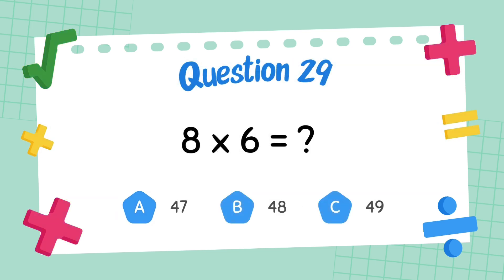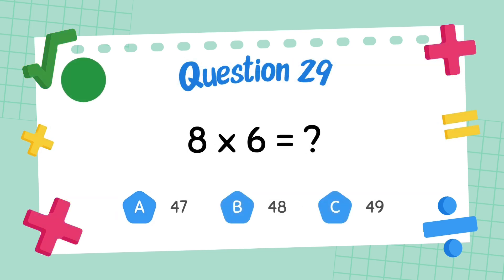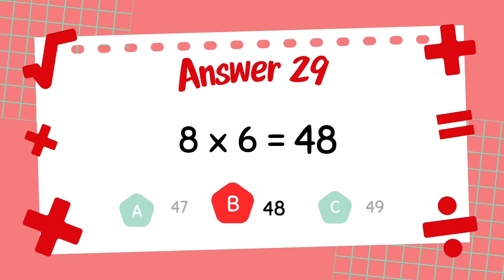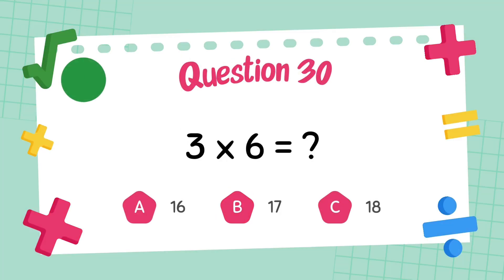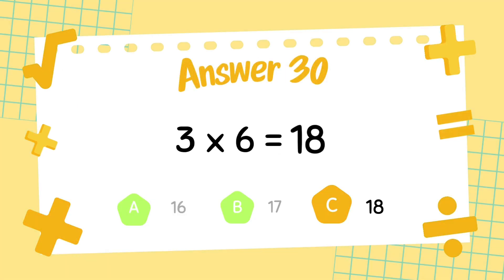What is 8 multiply 6? The answer is 48. What is 3 multiply 6? The answer is 18.